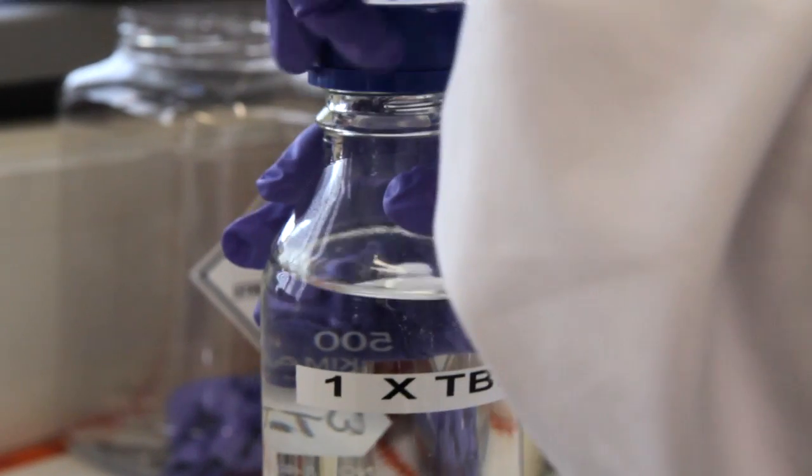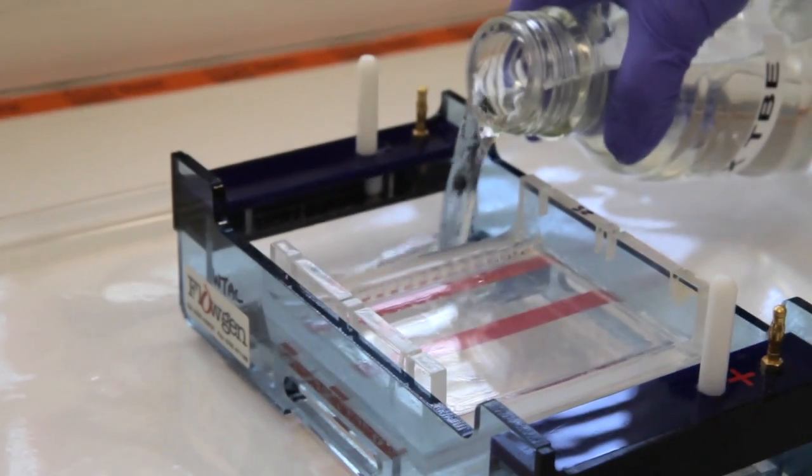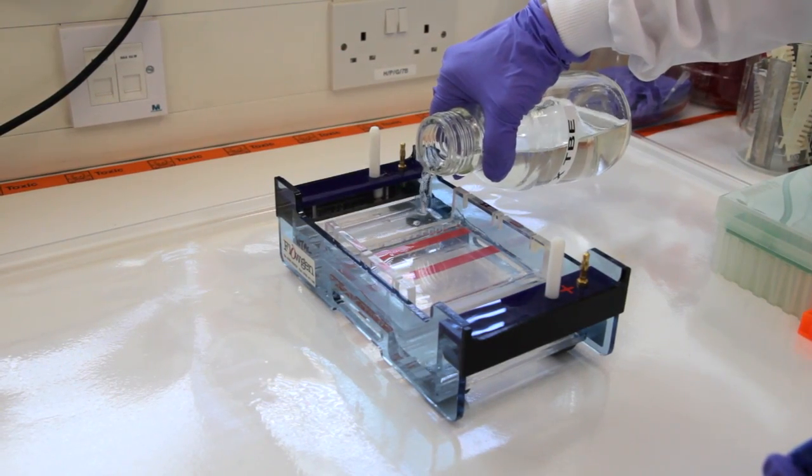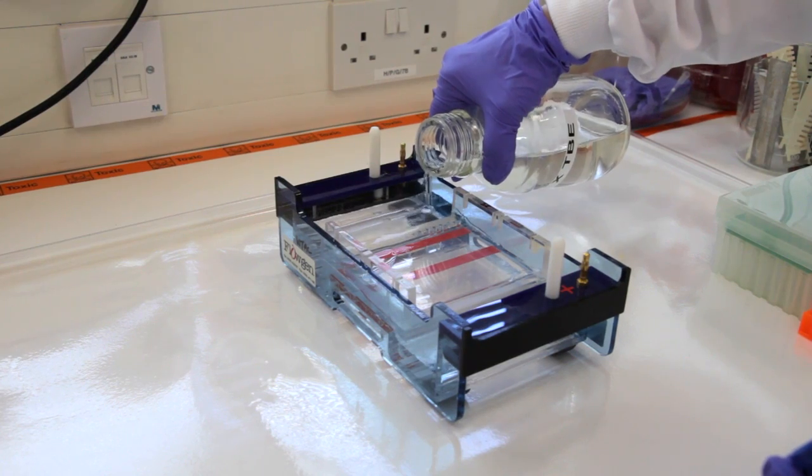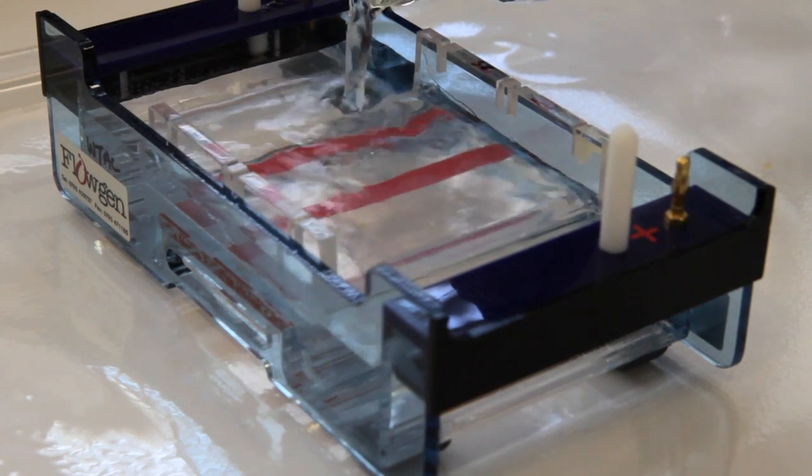You'll need running buffer at the same concentration that you used to make the gel. If you used 1x TBE in the gel then use 1x TBE running buffer. If you use 0.5x TBE to make up the gel then use 0.5x TBE running buffer.